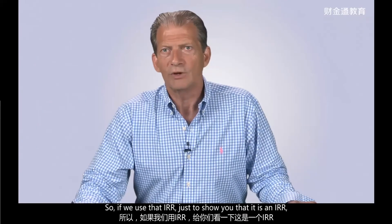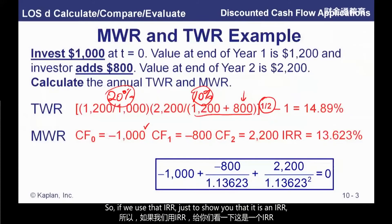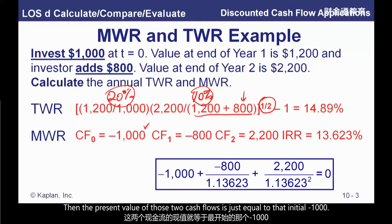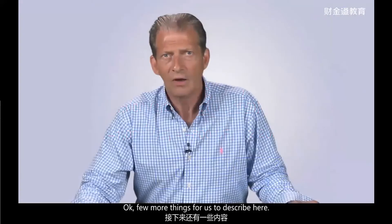Just to confirm it is an IRR: if we discount those two future cash flows at 13.623%, the present value of those two cash flows is just equal to that initial outlay of minus $1,000.